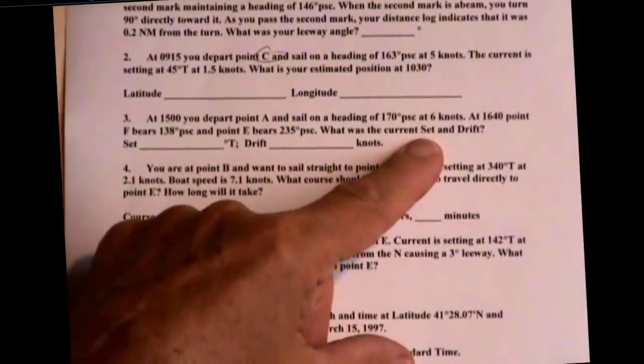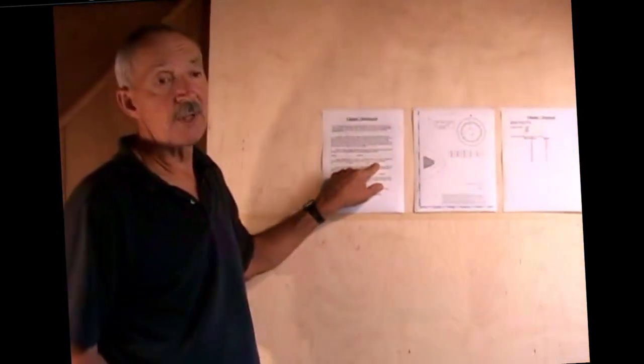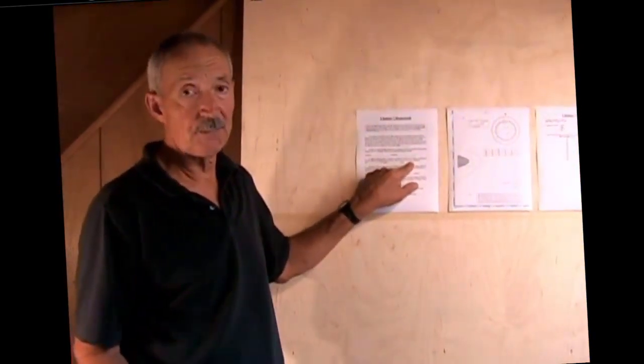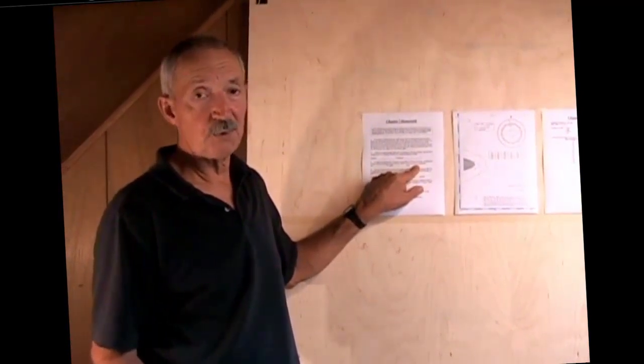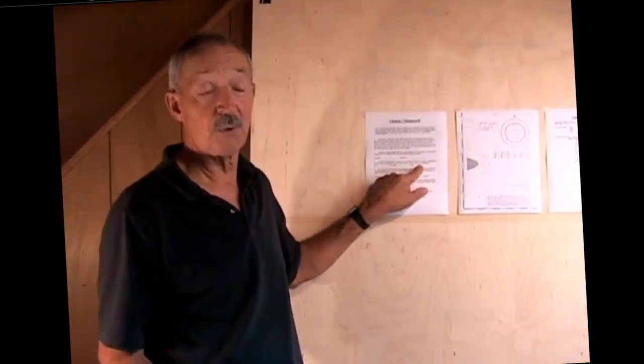What was the current set and drift? This is a case where you end up at some location different than your DR, but you don't have a current table that tells you what the current was.